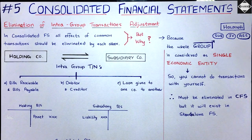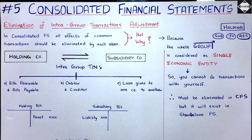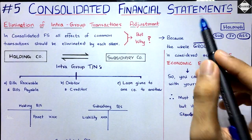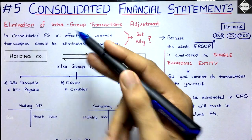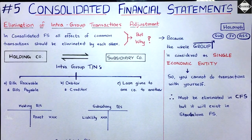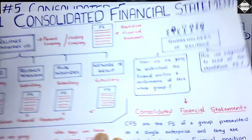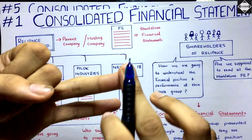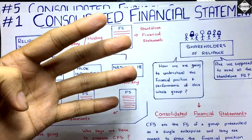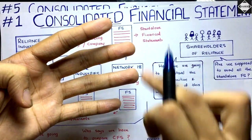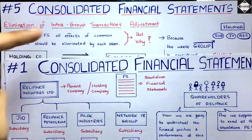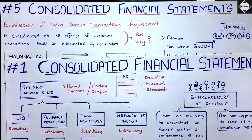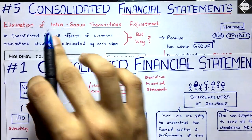Welcome back everyone to the fifth video of the Consolidation chapter. Today we are going to understand how to deal with intra-group transactions in consolidated financial statements. First, let's understand what intra-group transactions are. These are transactions which take place within the boundary of the group — the holding company, all its subsidiaries, joint ventures, and associates.